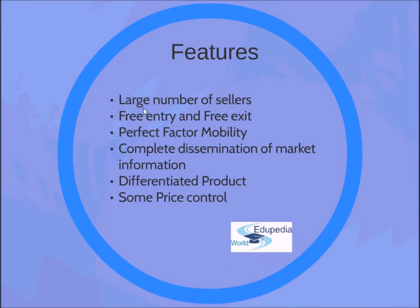Because monopolistic competition is a competitive market like perfect competition, there are large numbers of sellers and buyers so that no individual can affect the overall market. As there are competitors, there is free entry and exit of firms — there is no significant barrier which can restrict the entry and exit of firms. Another characteristic shared with perfect competition is the perfect mobility of factors of production, meaning factors are free to leave or join a particular industry.